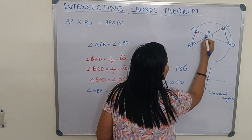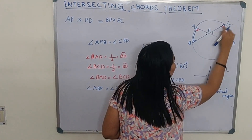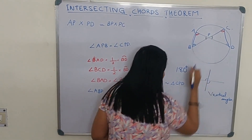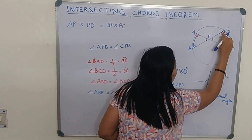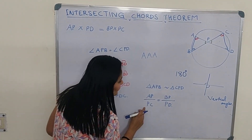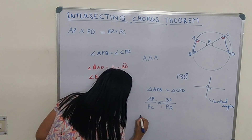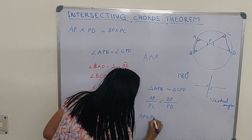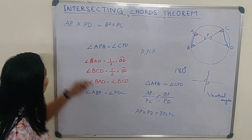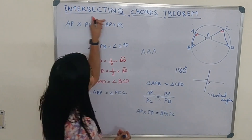Since the triangles are similar, we can write the ratio: AP divided by PC equals BP divided by PD. Cross multiplying this, we get AP times PD equals BP times PC. So now we have proved the Intersecting Chords Theorem.